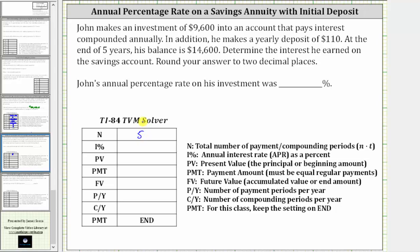If the interest was compounded quarterly and he made quarterly deposits, N would be five times four, or 20. If the interest was compounded monthly and he made monthly deposits, N would be five times 12, or 60. But in this case, the interest is compounded annually and he makes annual deposits, so N is five.